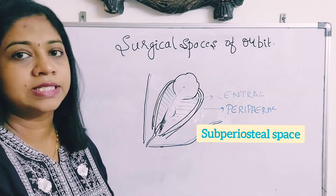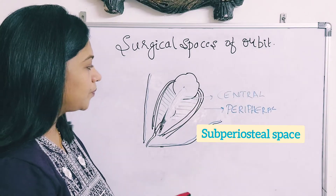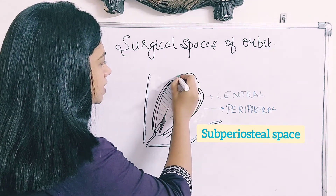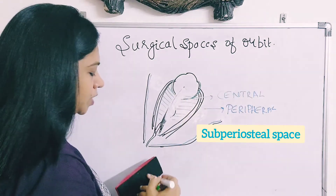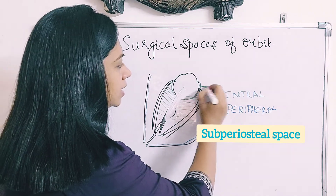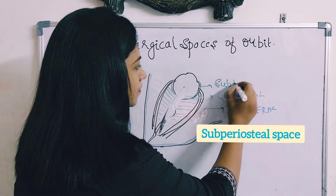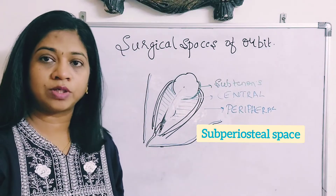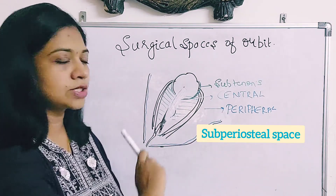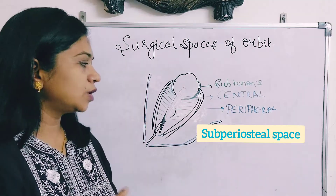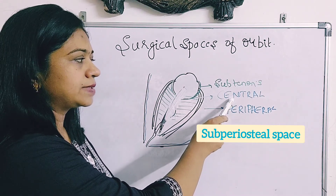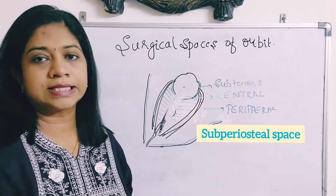The central space is also called the retrobulbar space since it is there behind the eyeball. The eyeball is covered by a thin sheath called the tenon's capsule, which extends from the limbus and covers the eyeball all over. There lies a potential space between the tenon's capsule and the sclera called the sub-tenon's space. So we have four surgical spaces of the orbit: the subperiosteal space, the peripheral space, the central space, and the sub-tenon's space.